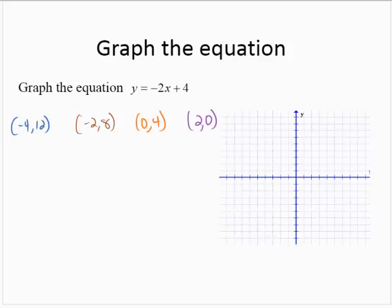And let's plot them. We have negative 4, 12. Let's just use a scale of 1. So if this is 1 and this is 1, 2, 3, 4, 5, 6, 7, 8, 9, 10, 11, 12. Negative 4, 1, 2, 3, 4, 12. That would be about up here.